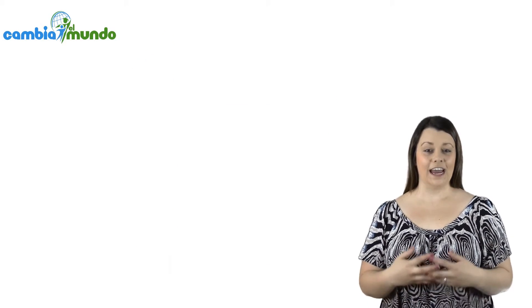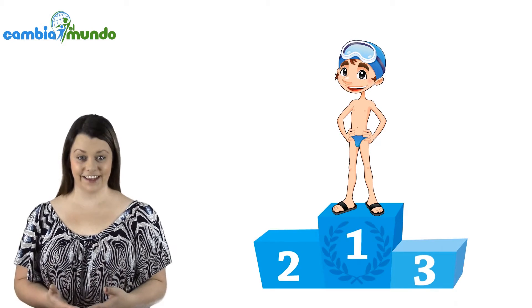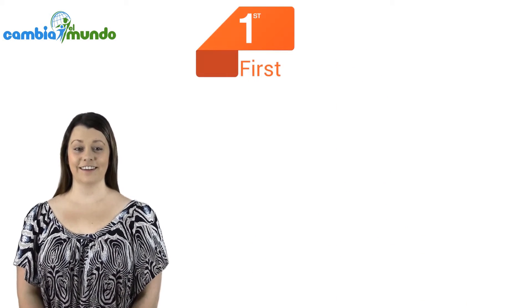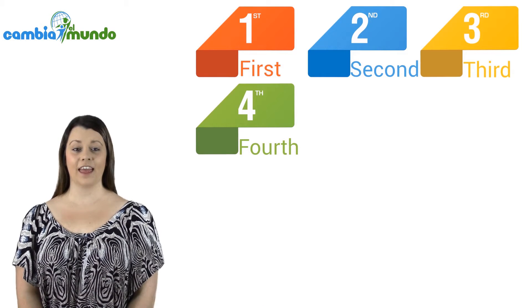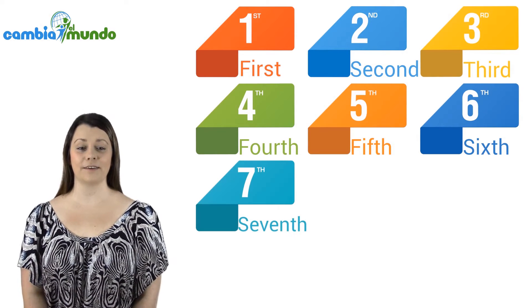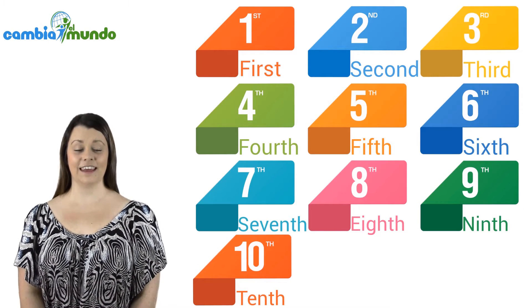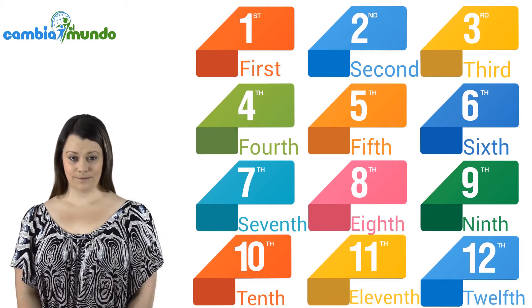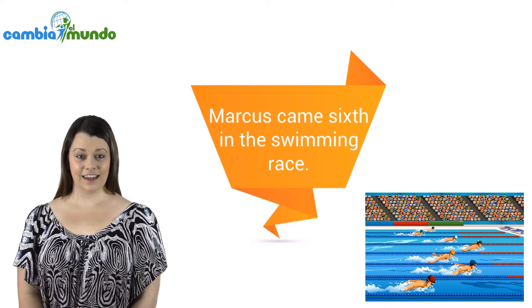Remember, cardinal numbers represent the amount of something there is. Ordinal numbers represent a position or ranking: first, second, third, fourth, fifth, sixth, seventh, eighth, ninth, tenth, eleventh, and twelfth. For example, Marcus came sixth in the swimming race.